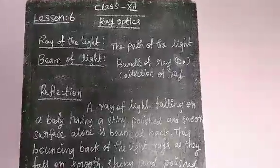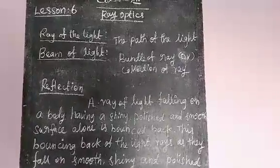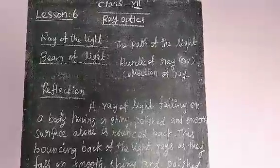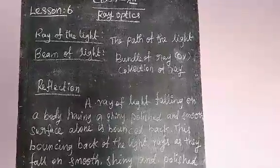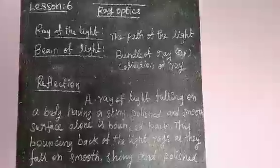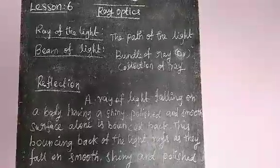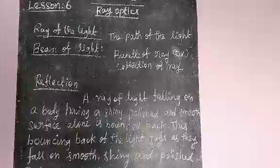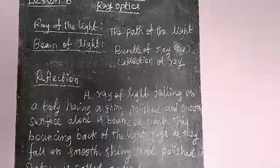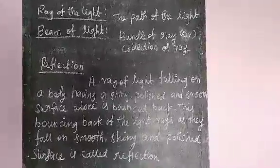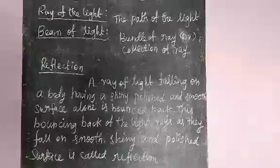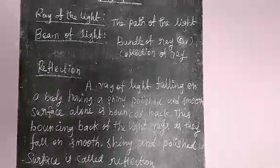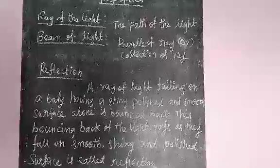What is Reflection? A ray of light falling on a body having a shiny, polished and smooth surface — this bouncing back of the light rays as they fall on a smooth, shiny and polished surface is called Reflection. For example, take a plain mirror.